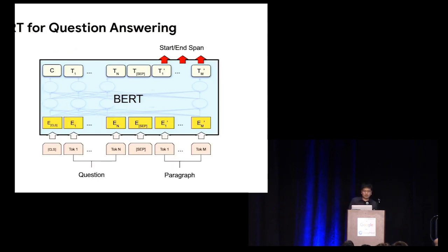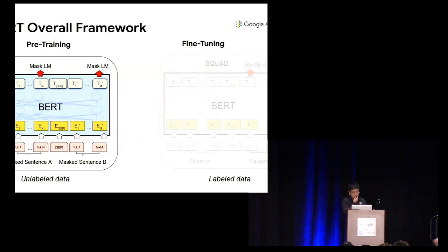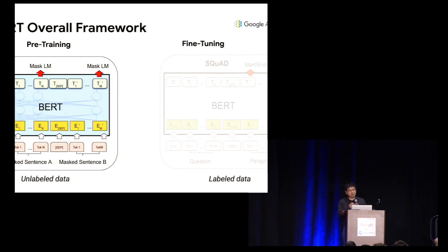For question answering, we use the same logic and use the representations corresponding to the tokens in the paragraph to indicate where the start and the end of the answer are. We finished talking about fine-tuning: we want the fine-tuning model to be deeply bi-directional and to compose sequences so it can be applied to multiple tasks.